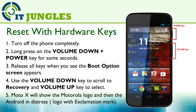You can also reset your device using the hardware keys. First, turn off the phone completely. Then long press on the volume down plus the power key for a few seconds. Release all keys when you see the boot option screen appears. Use the volume down key to scroll down to recovery, and press the volume up key to select.